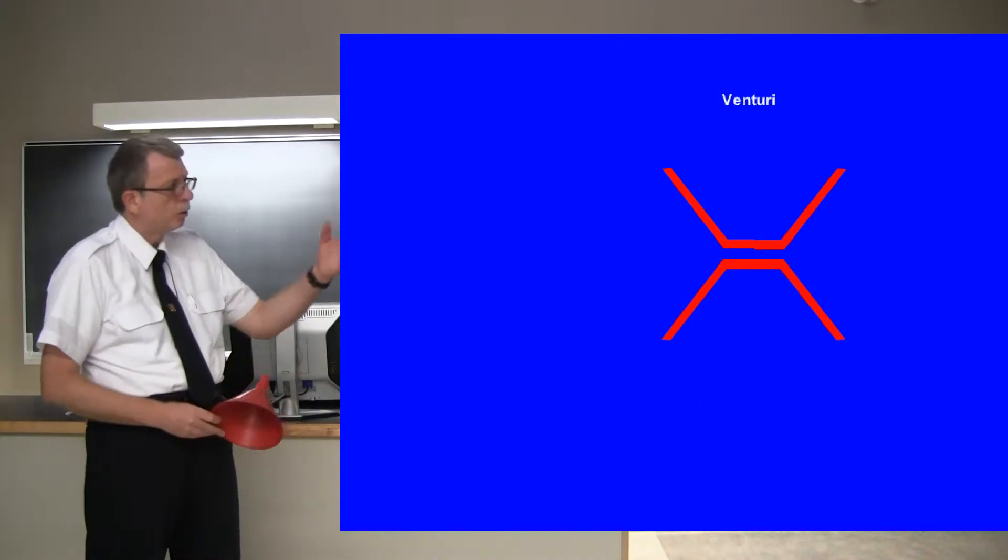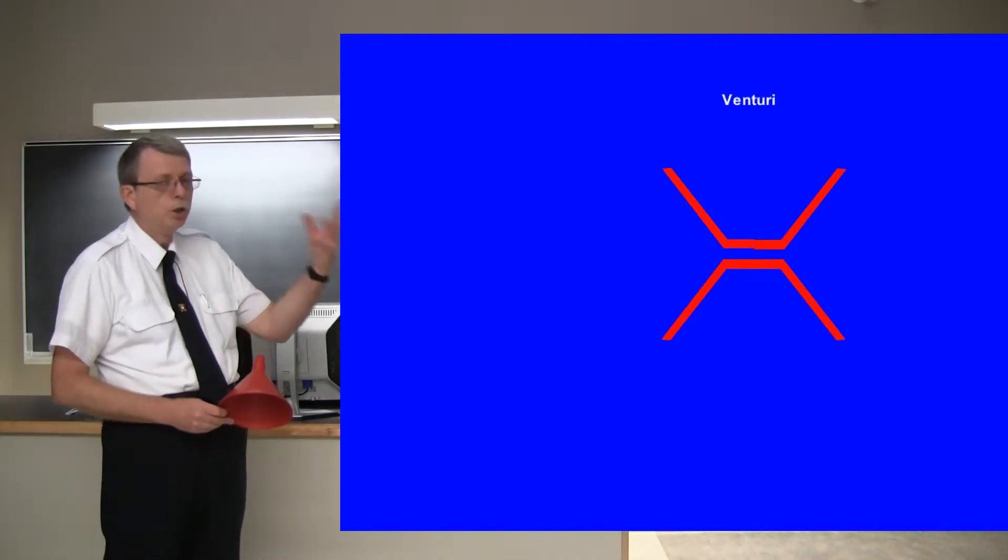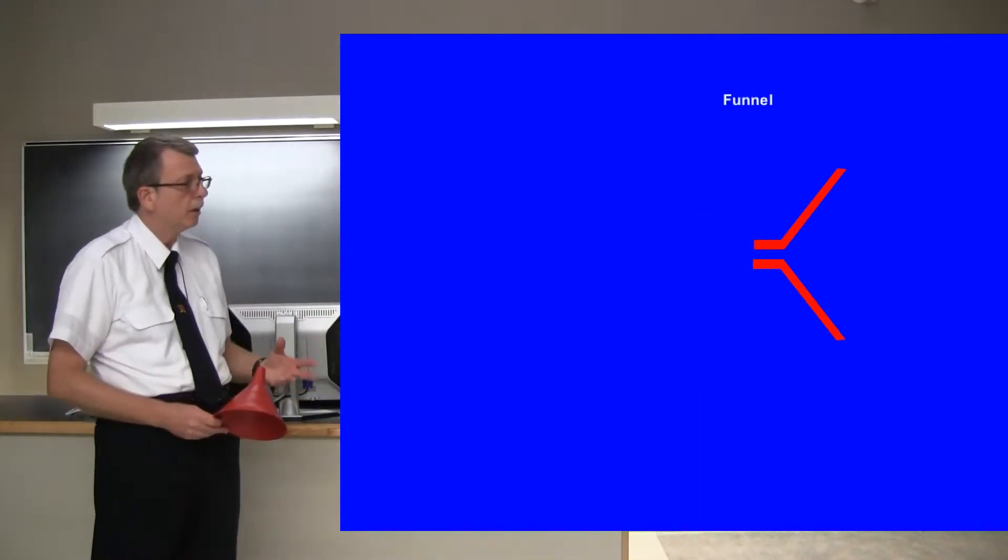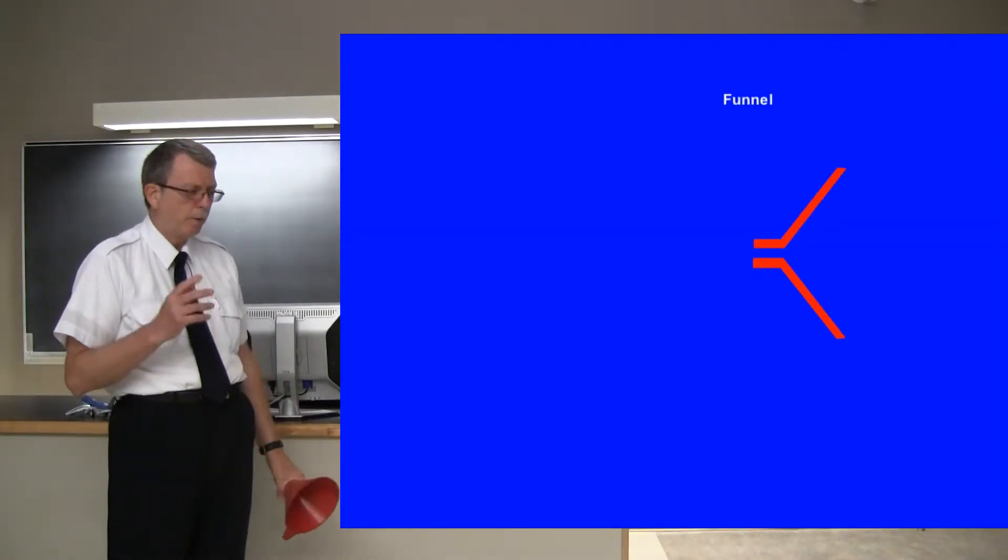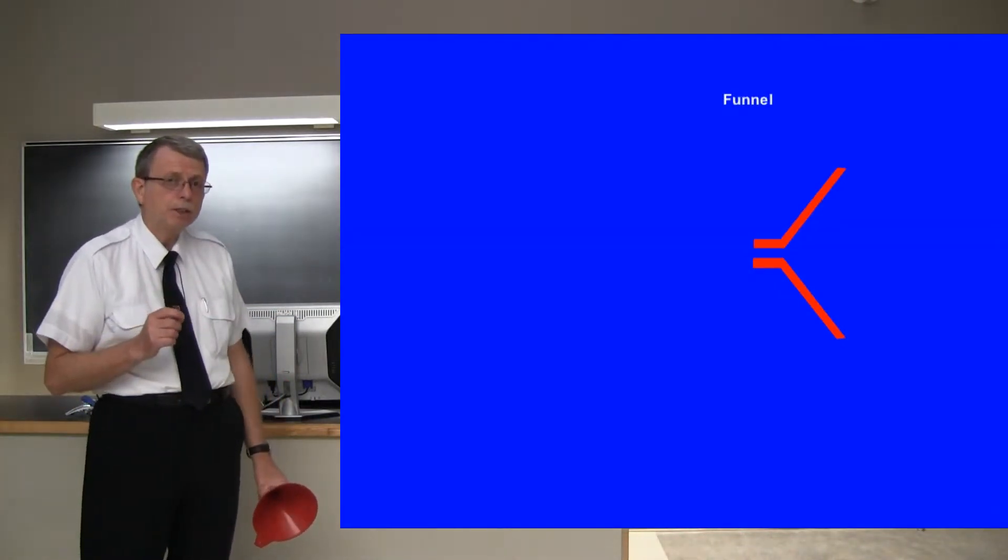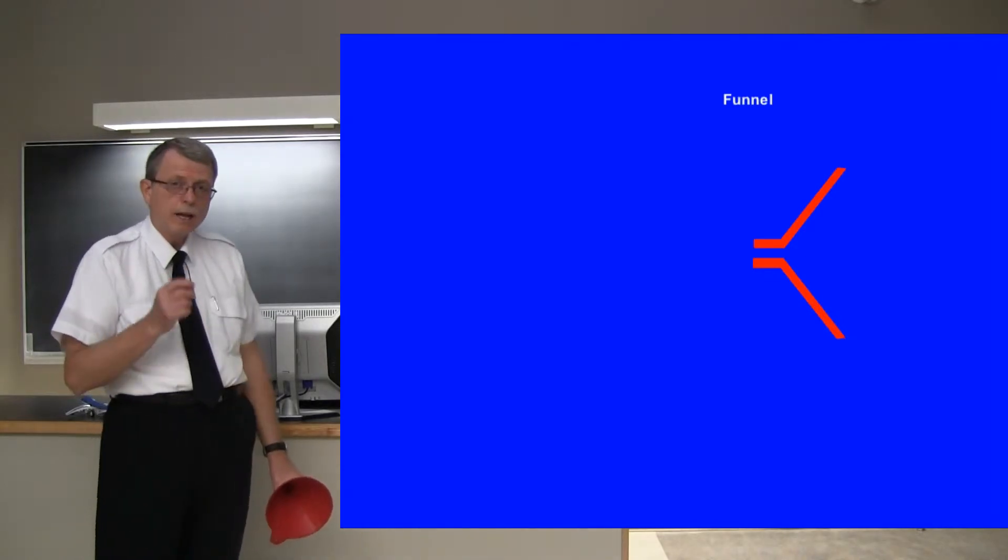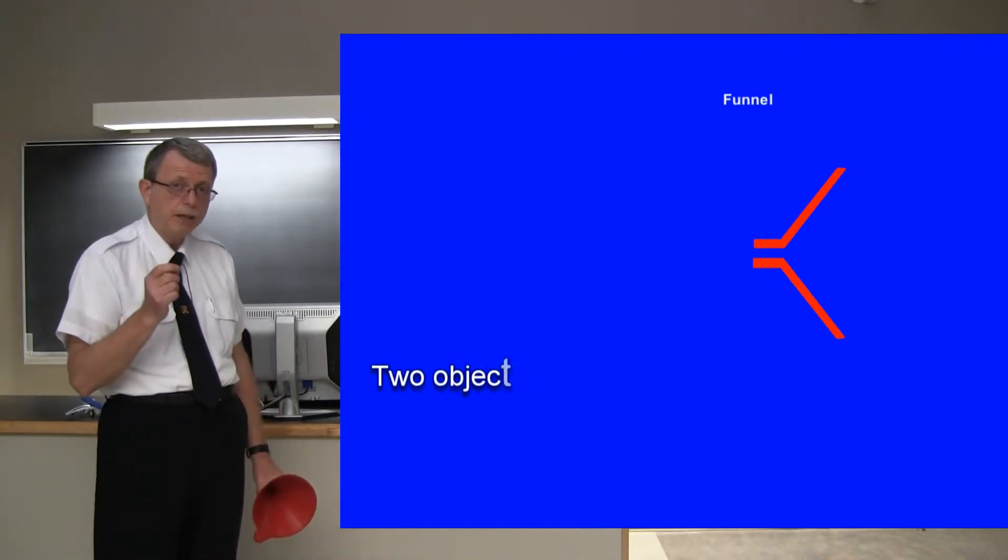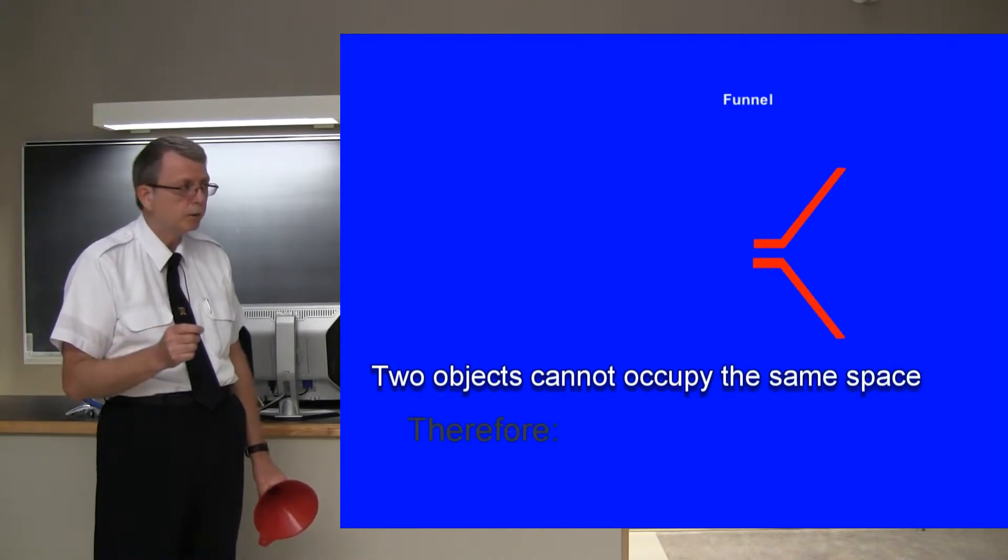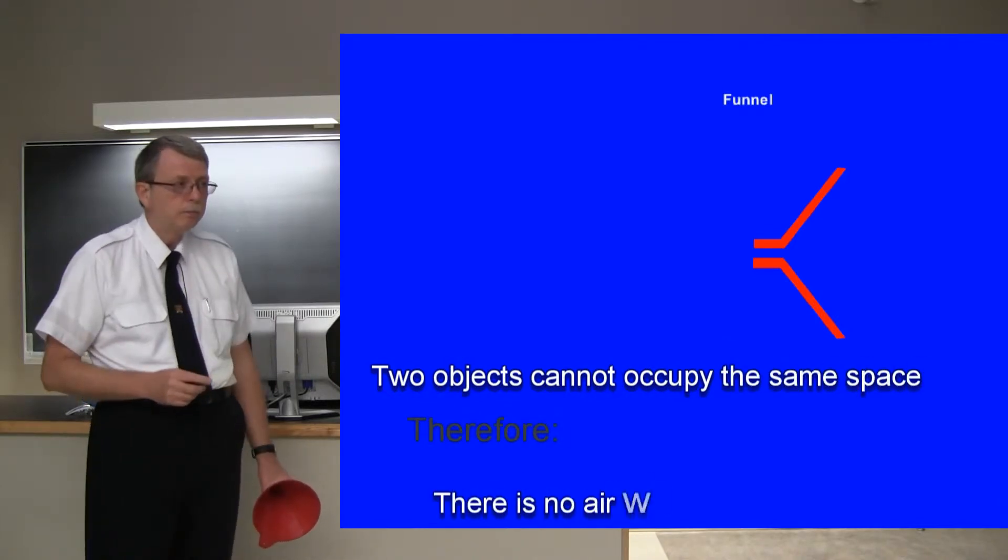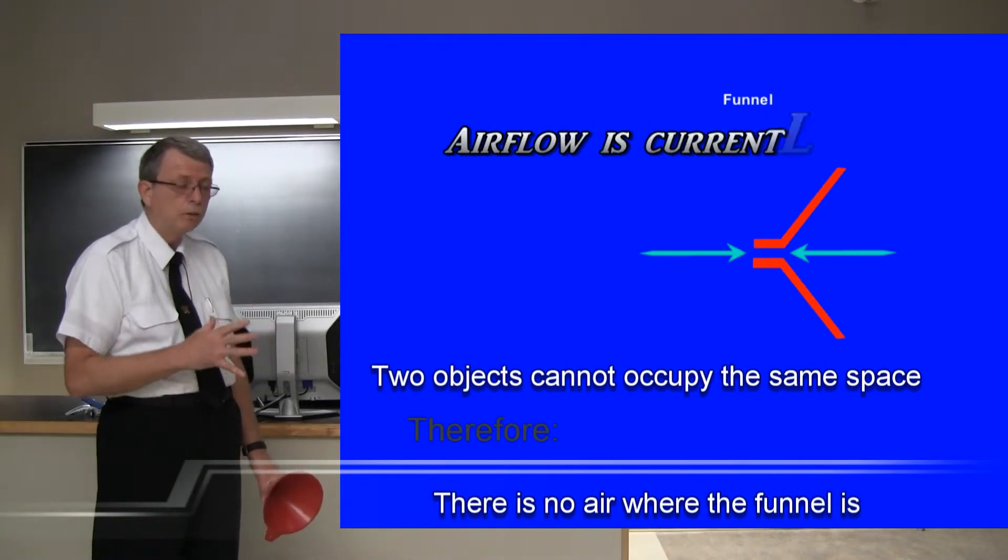So you can see here, the blue rectangle represents the air, and the red represents the funnel. Remember last time, we looked at something very much like this with a ball, and the principle at play is that no two objects can occupy the same point in space. So it was true with the ball, and it's true with the funnel, or the venturi.